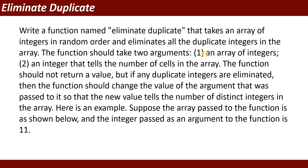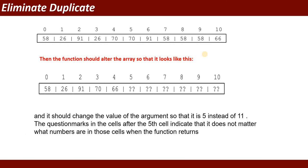Here is an example. Suppose the array passed to the function contains values 58, 26, 91, 26, 70, 70, 91, 58, 58, 58, and 66, and the integer argument passed is 11. The function should alter the array to 58, 26, 91, 70, and 66, and change the argument value from 11 to 5. The question marks in cells after the fifth cell indicate it doesn't matter what numbers are in those cells when the function returns.